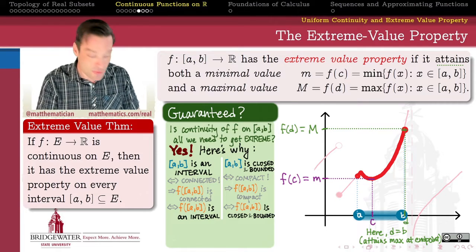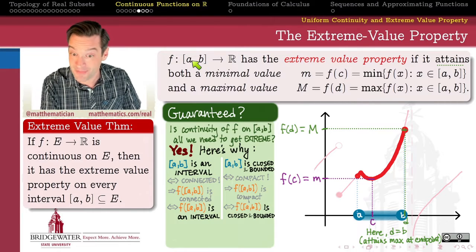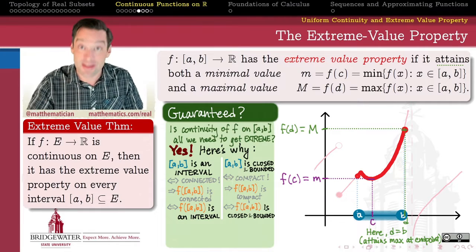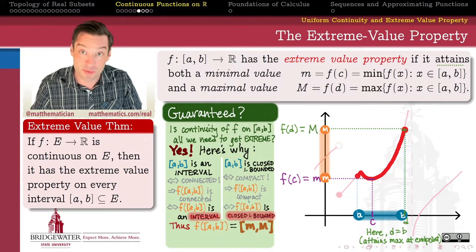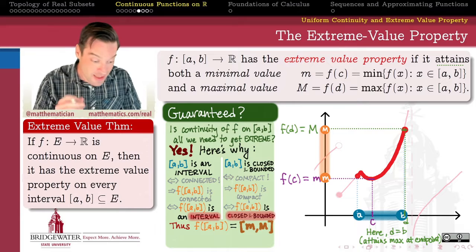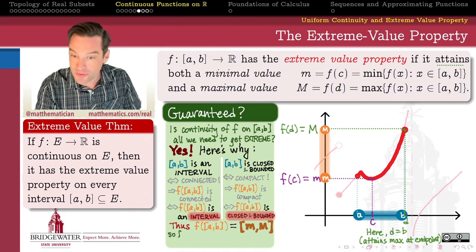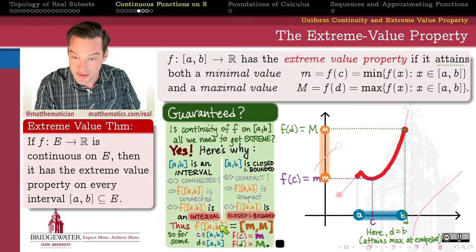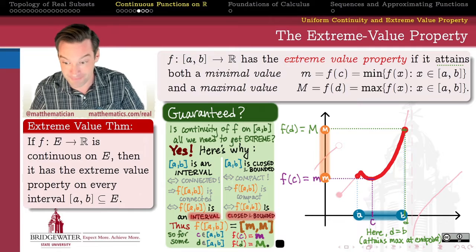So knowing how continuous functions interact with connected sets and how they interact with compact sets is enough to guarantee that because the domain is a closed bounded interval, the range will also be a closed bounded interval. A closed bounded interval on the real number line looks like a closed interval from some minimal value m to some maximal value M — both finite. That means there exist c and d in my domain such that f(c) equals m and f(d) equals M, because both m and M are contained in the image. And that's the proof — there's the extreme value theorem.